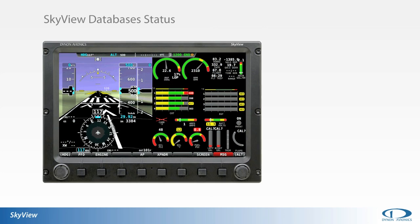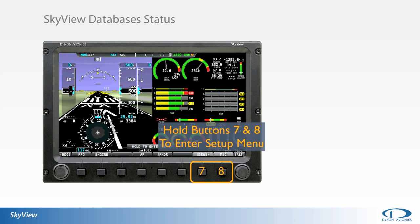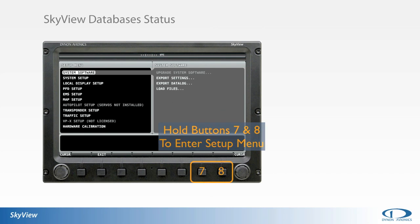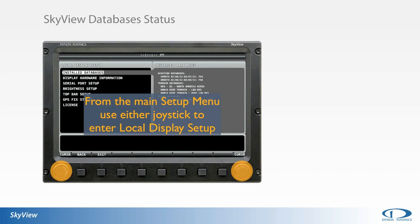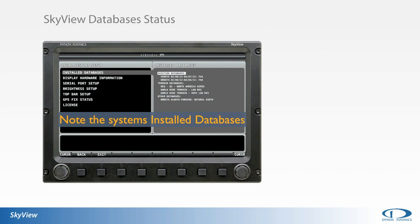To determine the current status of your Skyview system's database and firmware, you need to enter the unit setup menu. The main setup menu is reached by pressing and holding the number 7 and 8 buttons. Once in the main setup menu, use either joystick to select Local Display Setup.